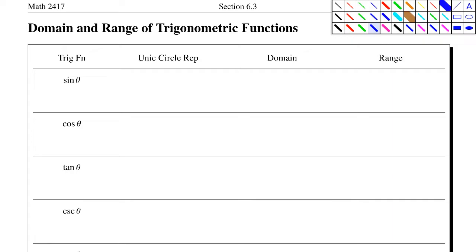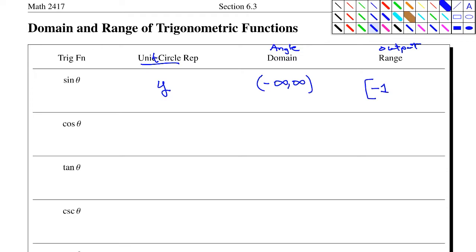Let's look at the domain and range of trigonometric functions. We're going to list all the trig functions, their unit circle representation, and the domain and range for each. The unit circle representation for sine is y. The domain is all real numbers — you can use any angle with sine. The range is the output: since sine is represented by y, and on the unit circle the y-values are bounded between negative one and one, the range is the closed interval from negative one to one.